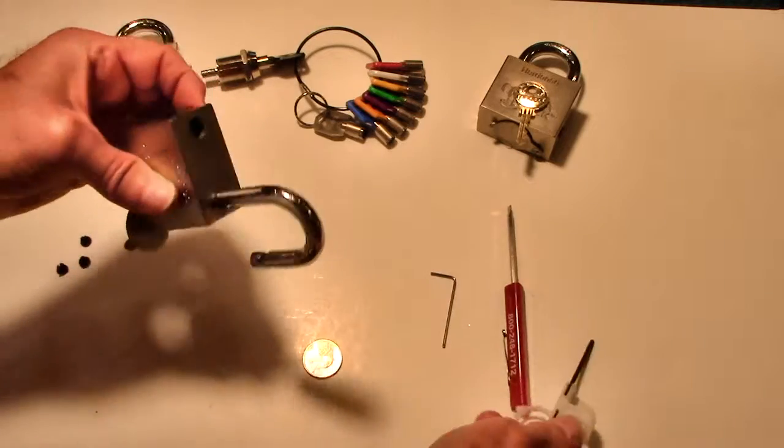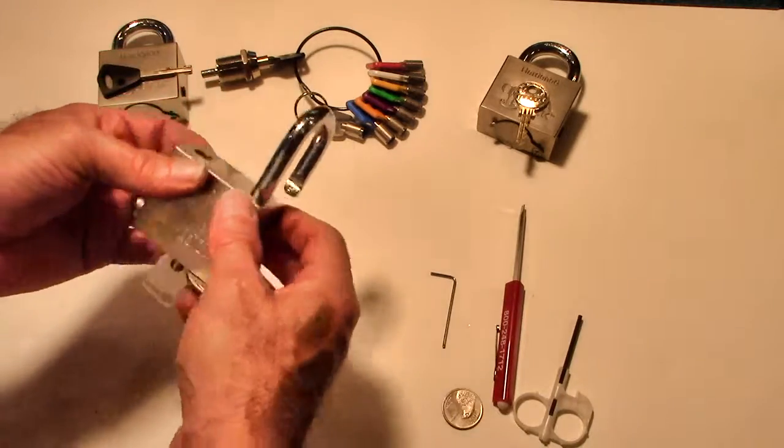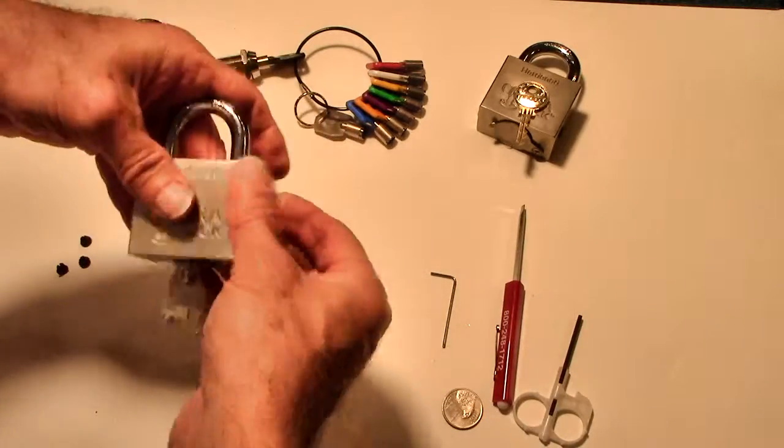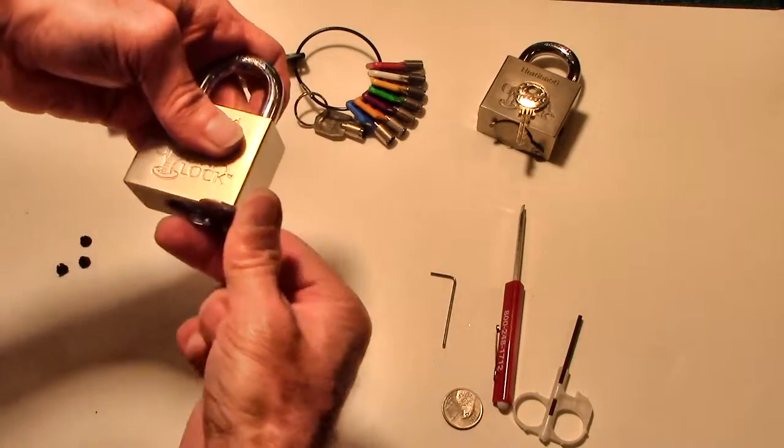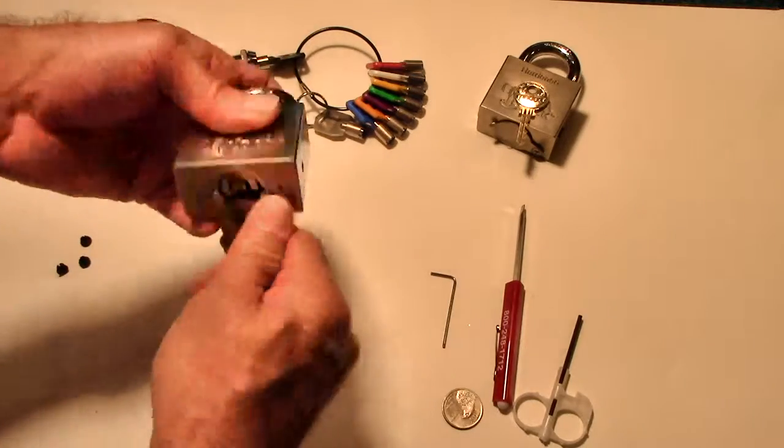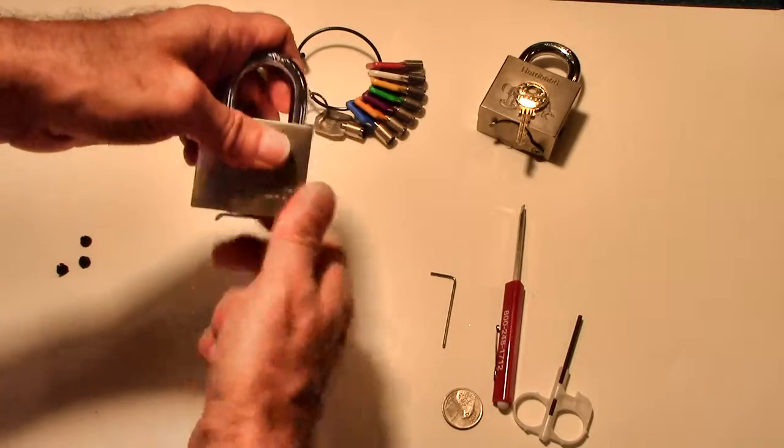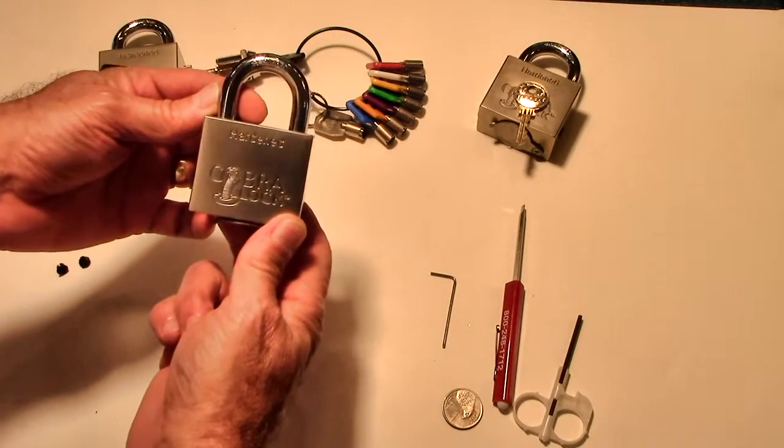That means that no one is going to be able to come up and just unscrew it and take the lock apart. Here again, you can test it. We've made a dust cover that goes over the lock cylinder, as you can see.